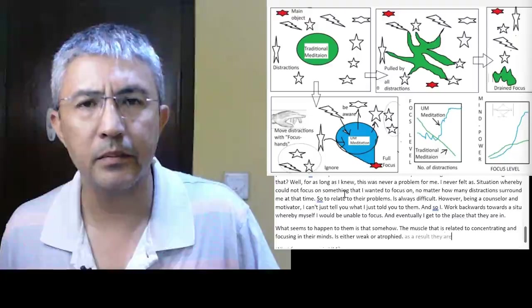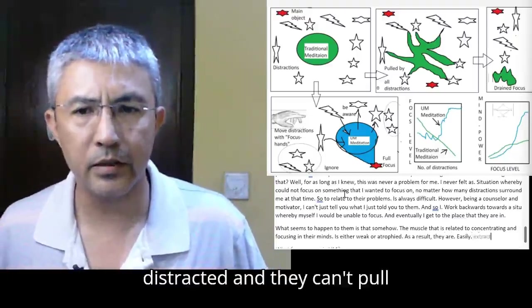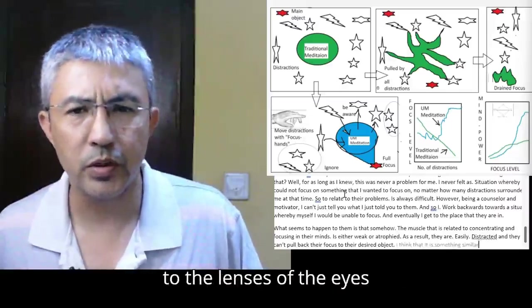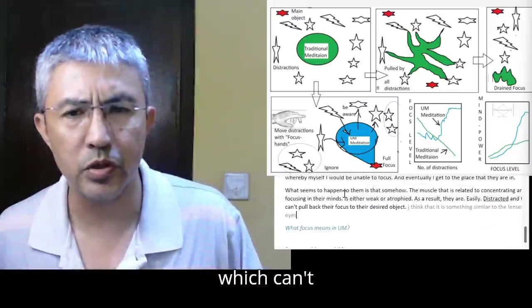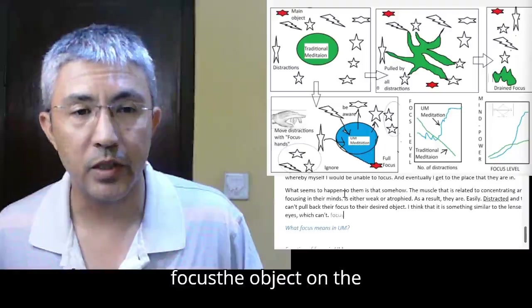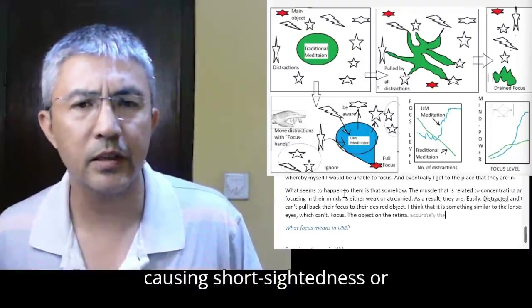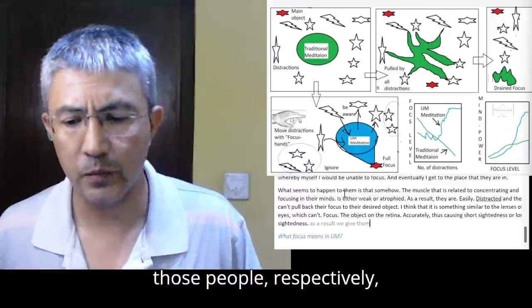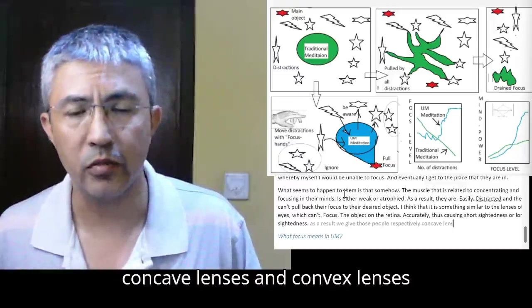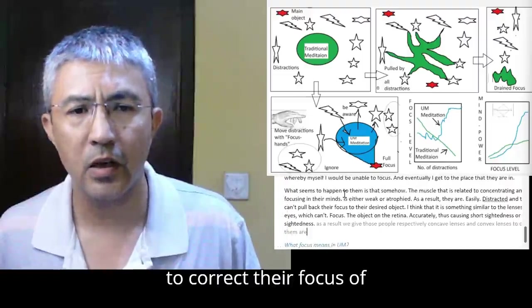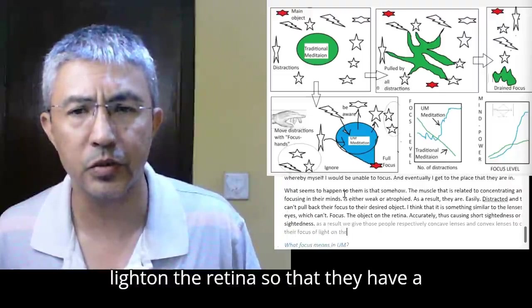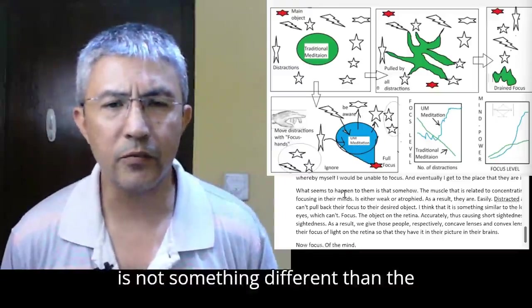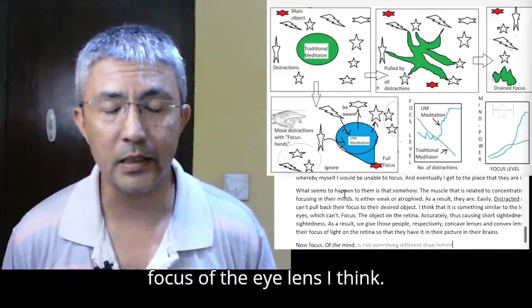As a result, they are easily distracted and can't pull back their focus to their desired object. I think it is something similar to the lenses of the eyes, which can't focus the object on the retina accurately, thus causing short-sightedness or long-sightedness.